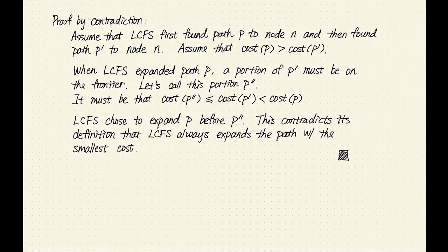I have also included an informal proof by contradiction. It starts by assuming that LCFS finds a longer path before finding a shorter path. Next, I show that this is impossible based on how the algorithm selects which path to expand at each step.